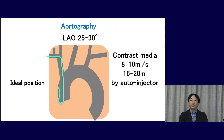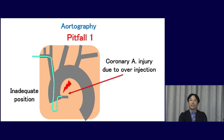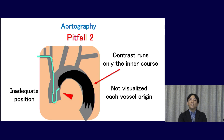When you feel it is difficult to select each vessel's origin, aortography is very useful. The ideal position of the catheter is as shown here. This is an inadequate position: when the tip of the catheter is migrated into the coronary artery, the artery may rupture due to contrast over-injection. Moreover, this inadequate position brings insufficient imaging because contrast tends to run only along the inner course of the aortic arch, leading to inadequate information.